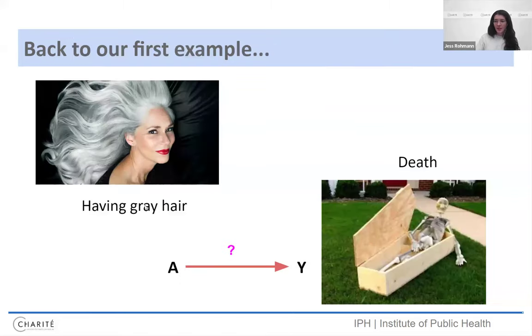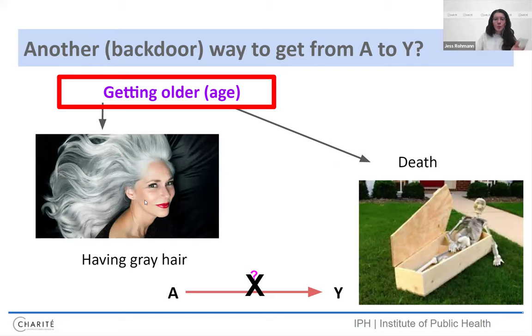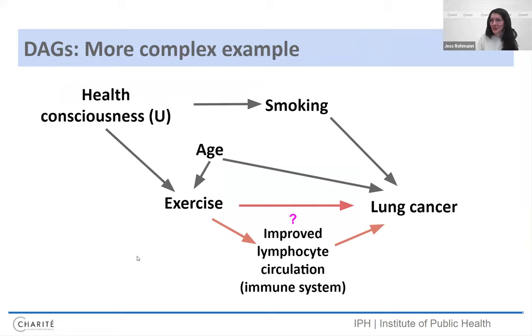So back to our first example, having gray hair and death. Is there another way to get from this variable to this variable that's not on the causal path? Yes, indeed, getting older. And if we adjusted for age, I'm sure that we would see that having gray hair doesn't increase your risk for death other than through the common cause stage. So after adjusting for age, we probably shouldn't dye hair as a prevention campaign, as you all correctly had felt through your intuition.